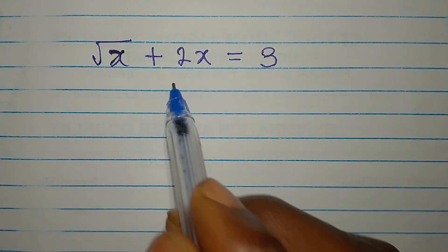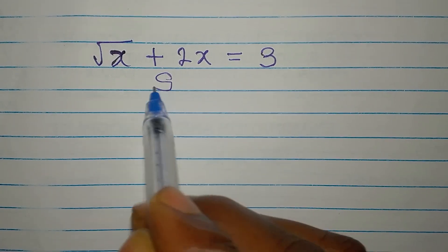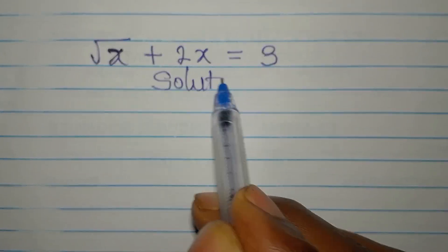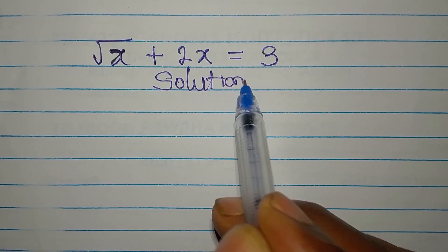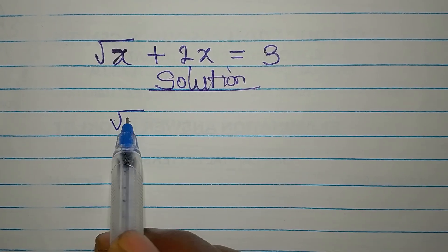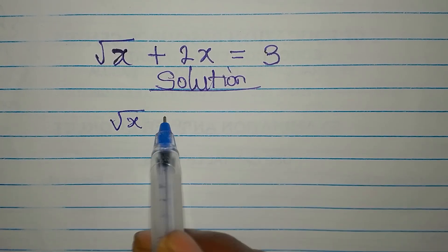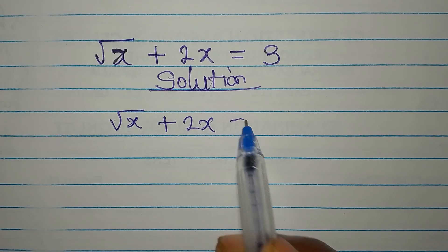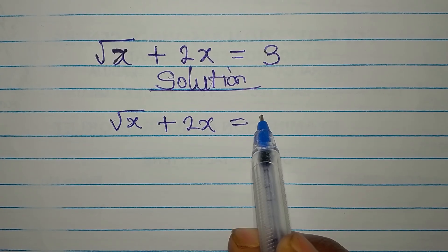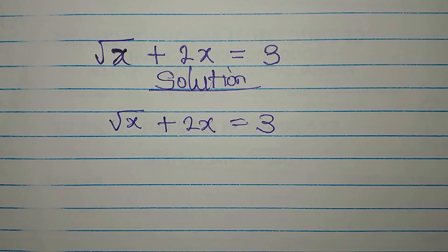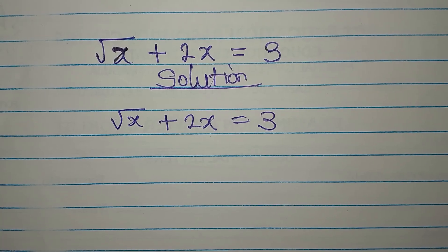Hi everyone. Okay, let's solve this. Square root of x plus 2x equals 3. And we are looking for the value of x.